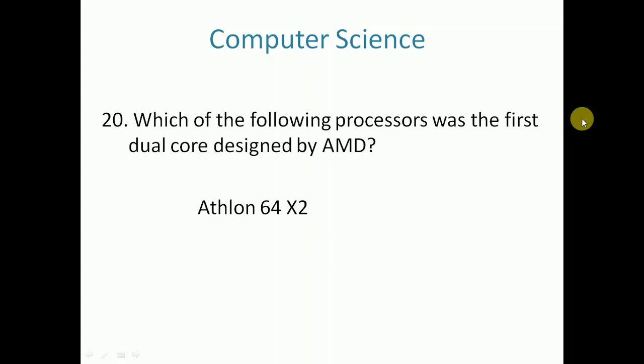Which of the following processors was the first dual core designed by AMD? Athlon 64 X2. The answer is Athlon 64 X2.